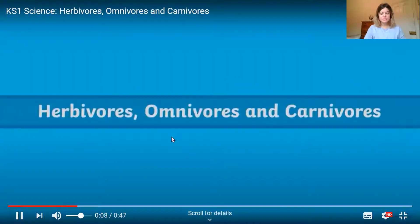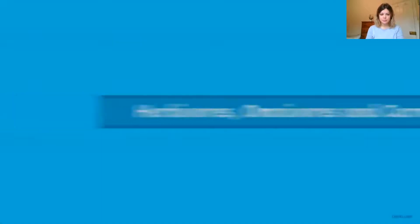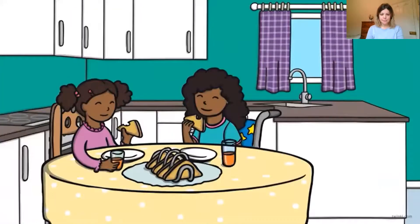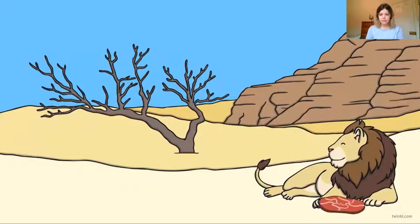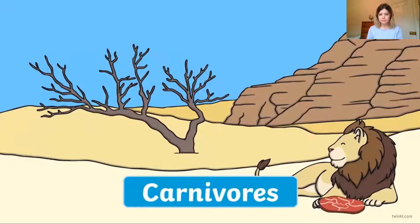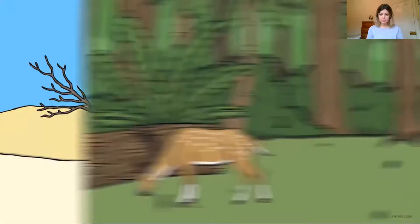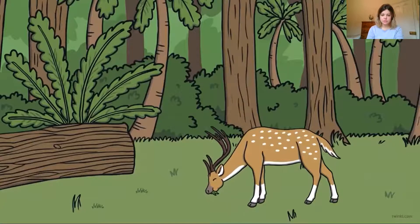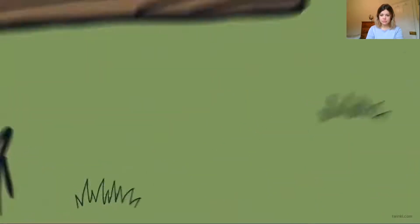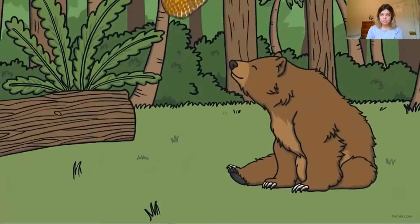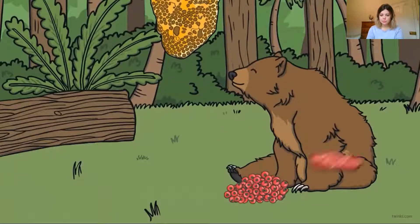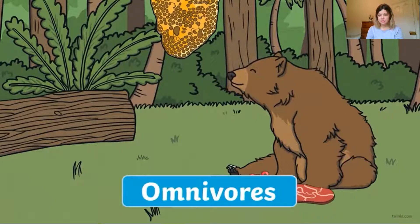All animals need food to survive — but what do they eat? Herbivores, omnivores and carnivores. Some animals eat only meat — they are called carnivores. Some animals eat only plants — they are called herbivores. Other animals eat a mixture of both plants and meat — they are called omnivores.